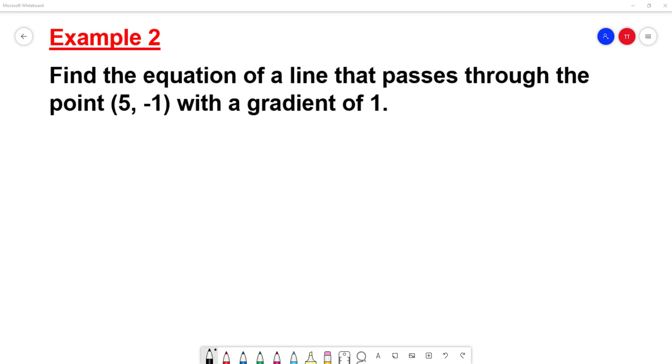Here's a question for you to try. You can pause the video, and when you're done, I will go through my work solutions. Okay, welcome back. So the question says, find the equation of a line that passes through the point (5, -1) with a gradient of 1.